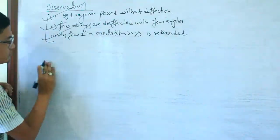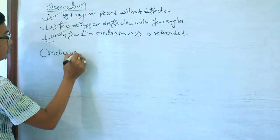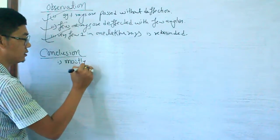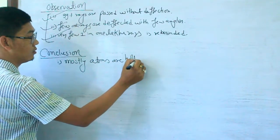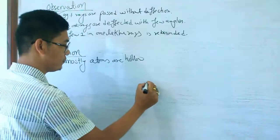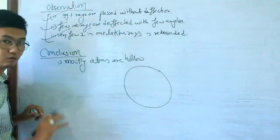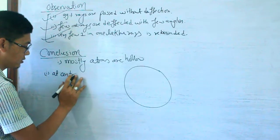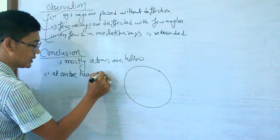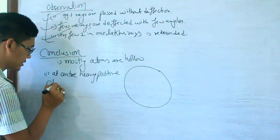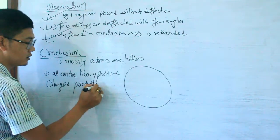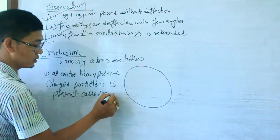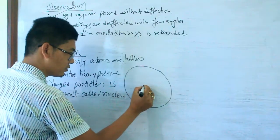Rutherford drew conclusions from these observations. His first conclusion was that mostly atoms are hollow. At the center of the atom, there is a heavy positively charged particle, which is called the nucleus.